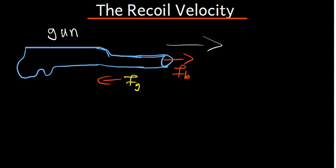The recoil velocity is basically the velocity which is going to be going in the opposite direction to the velocity of the bullet. Initially the bullet and the gun are going to be at rest. Then after the shot, we expect to have the velocity of the gun and the velocity of the bullet. Since the gun is moving in the opposite direction to the bullet, we are going to assign a negative sign to that velocity. So in general, the recoil velocity is always negative.